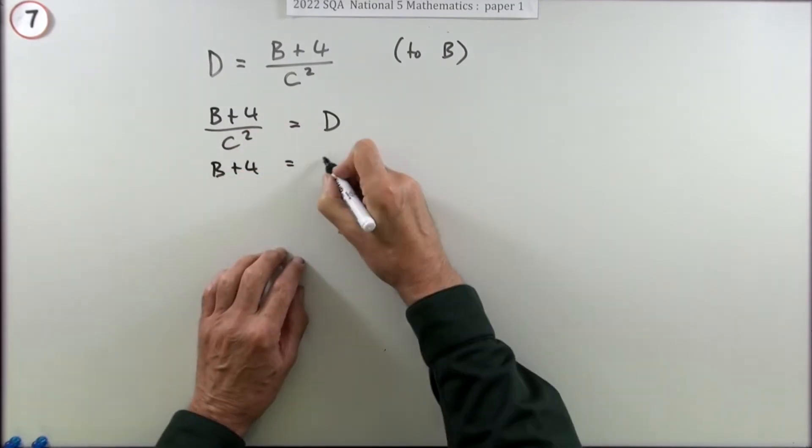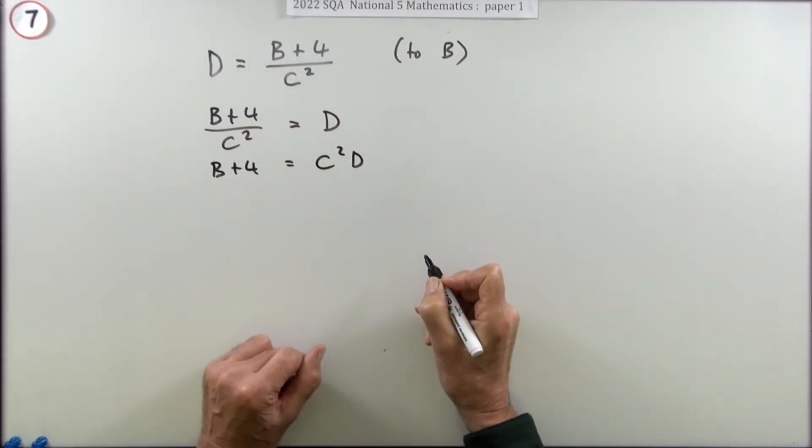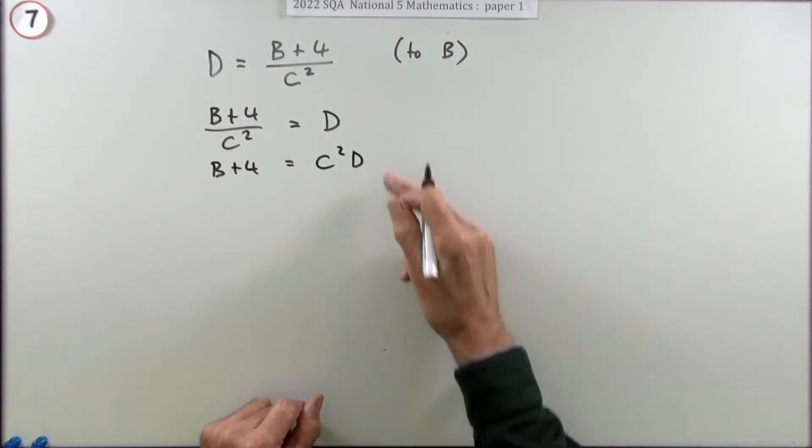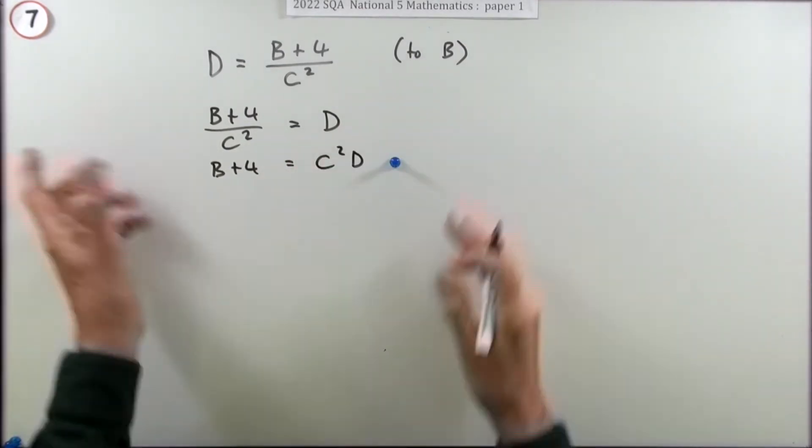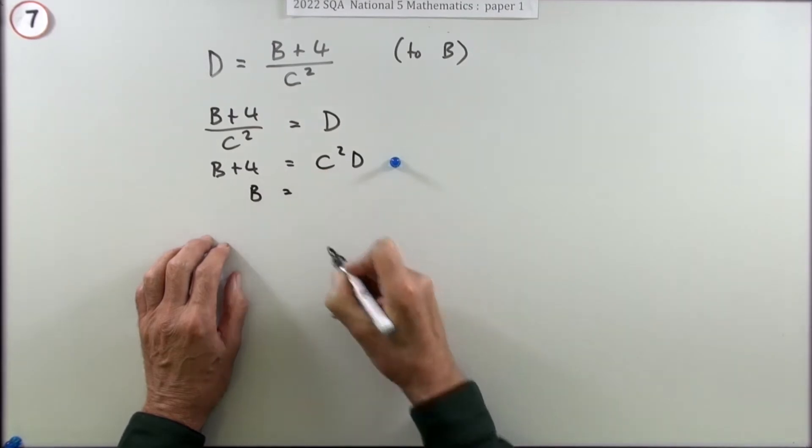So B plus four - take the C squared across and multiply. I'll just put them down in alphabetical order, it won't really matter. Doing that gets a mark. It's an easy B question, this.